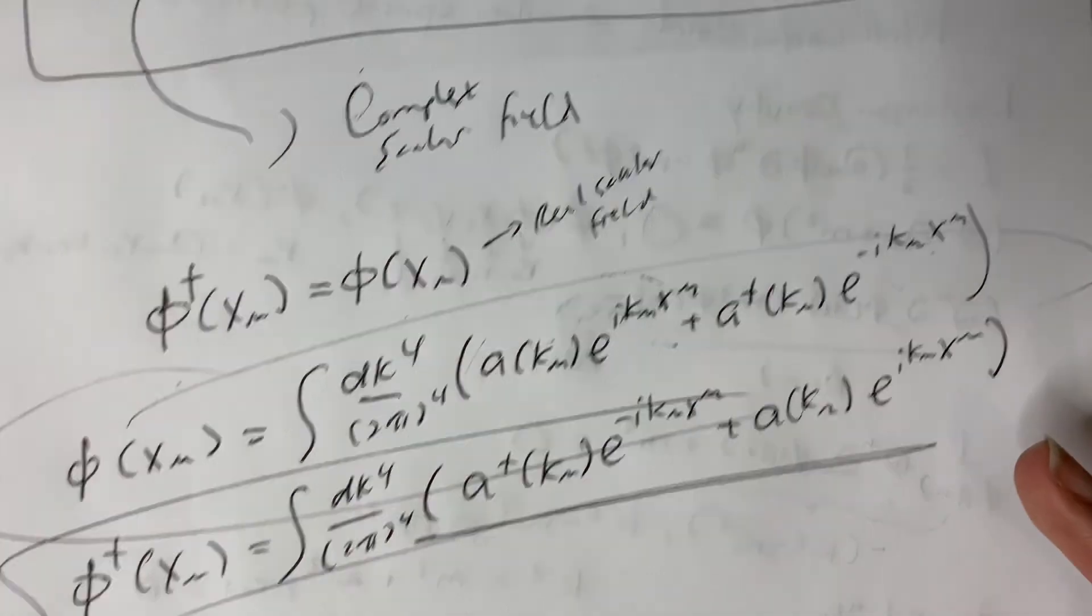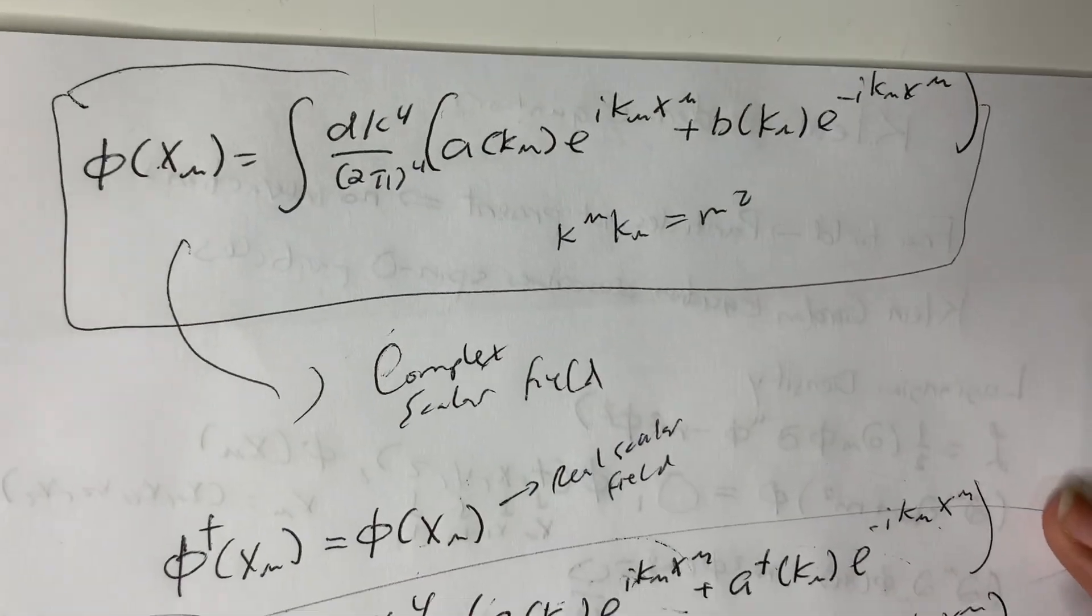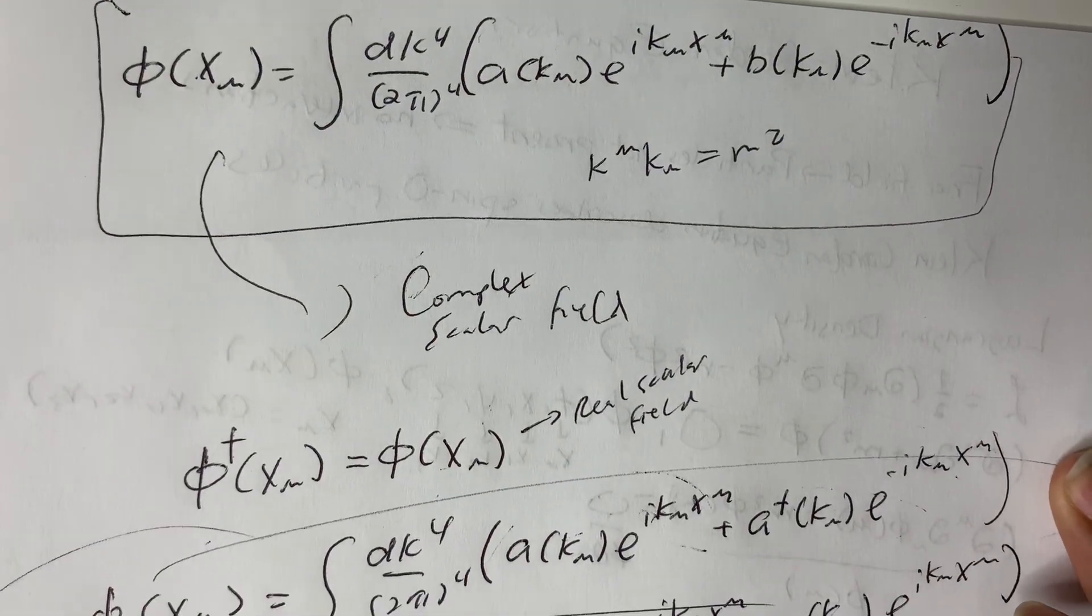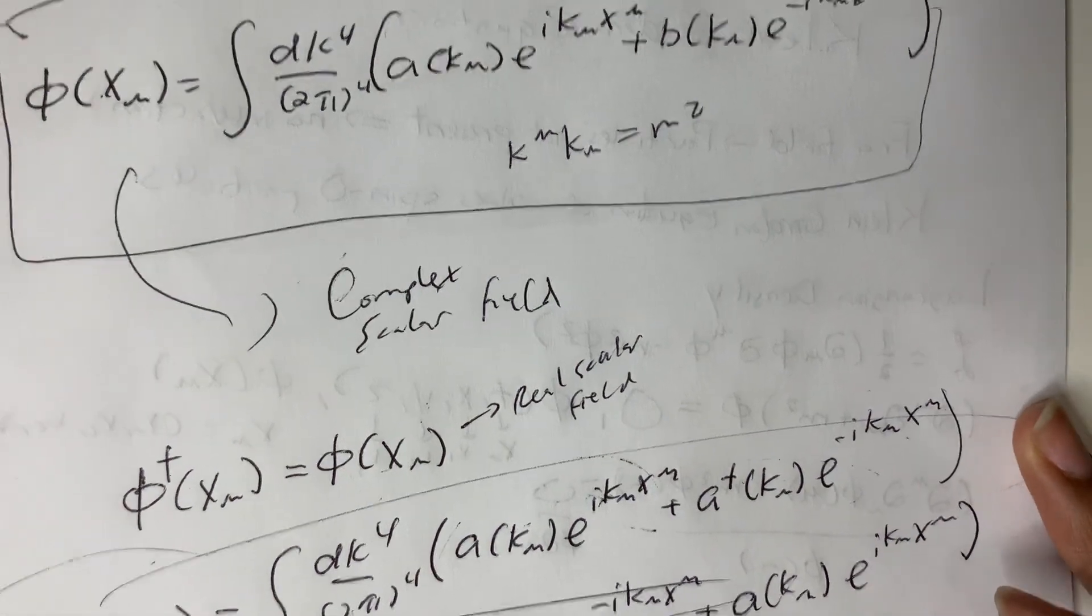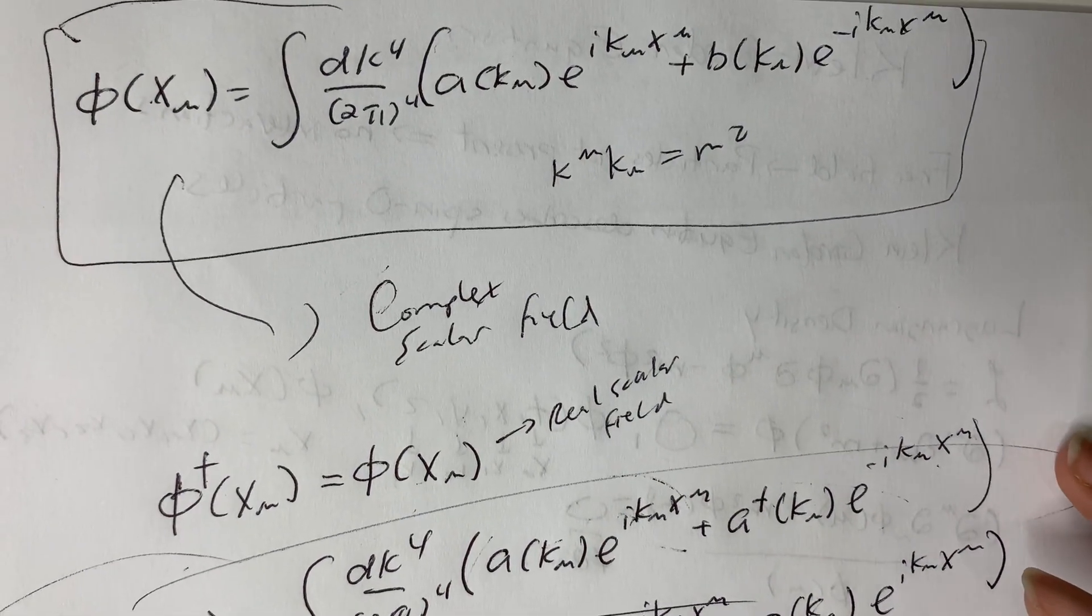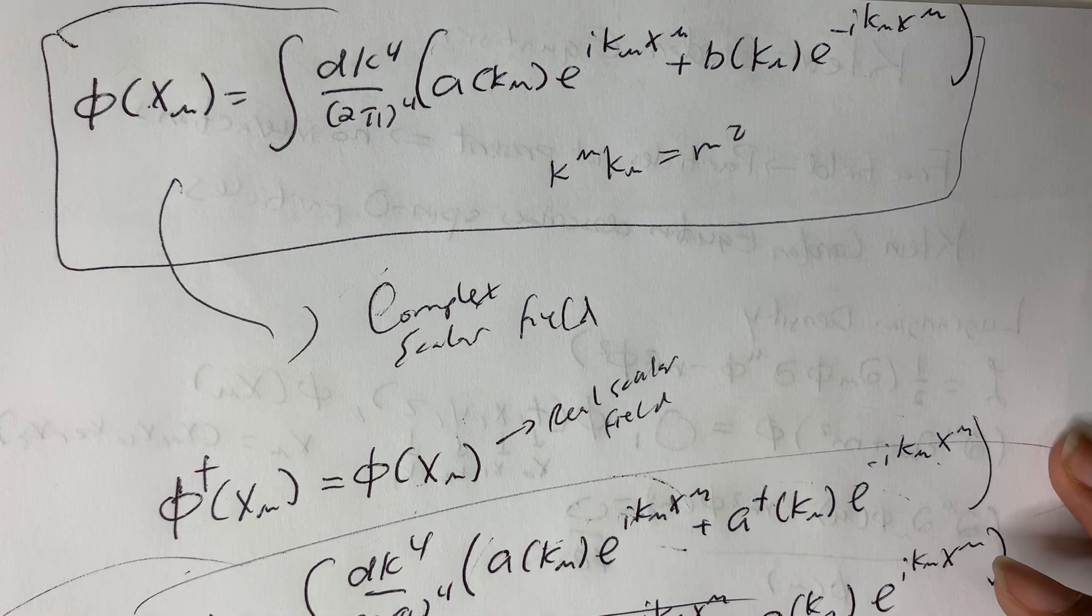So yeah, I think that's pretty much it. That's how we solve the Klein-Gordon equation for a free scalar field, for a mass-on-shell particle, well, mass-on-shell field, I guess you'd say.